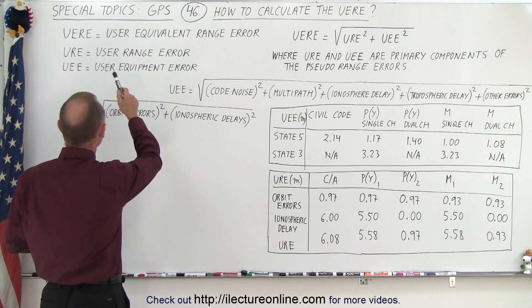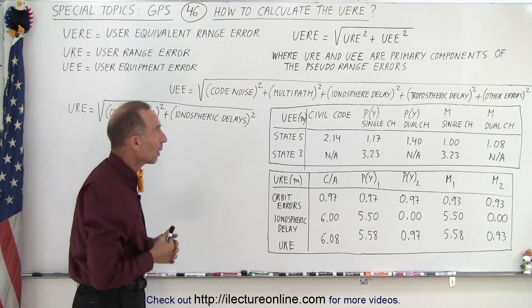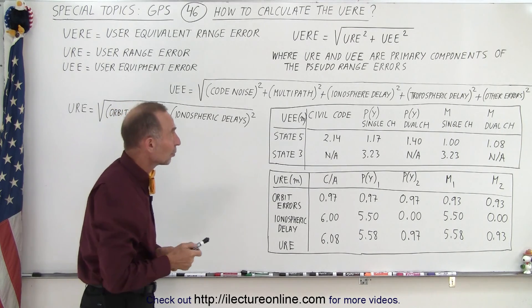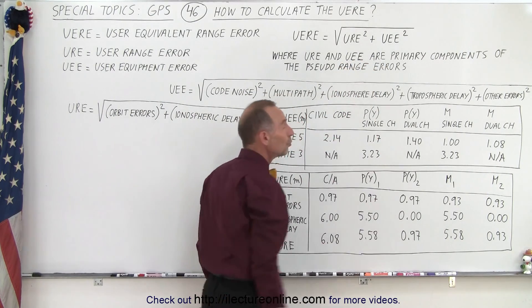Well, first of all, UERE is called the User Equivalent Range Error. In the previous video, we saw what it represented. Now, it turns out that it's made up of two components, the URE and UEE.